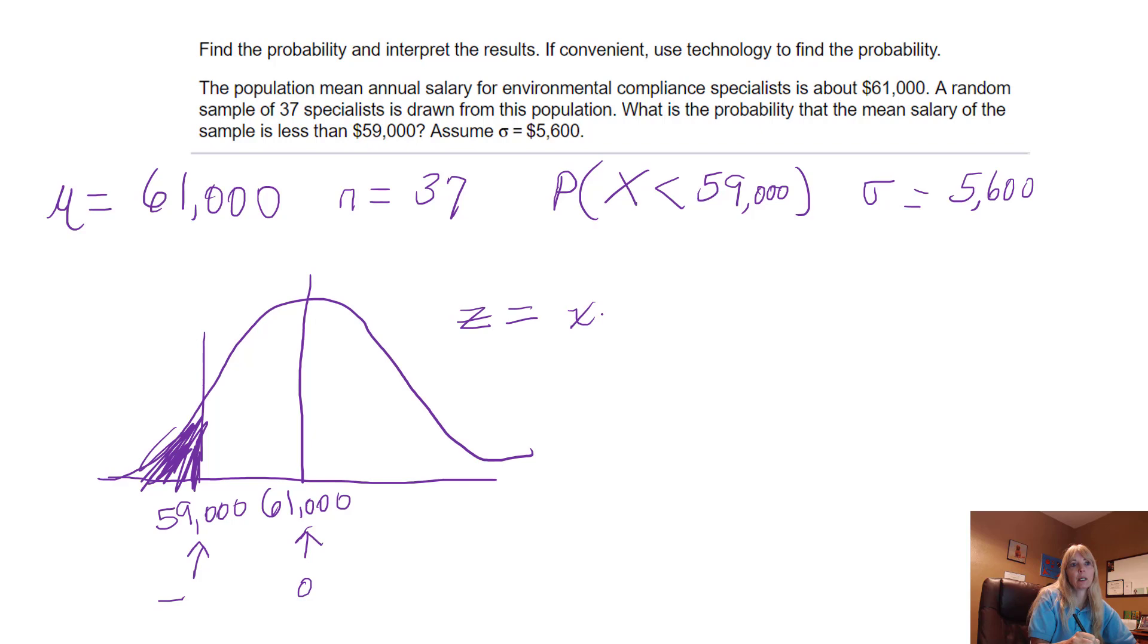Well, we use my formula, x minus μ over the standard deviation. But wait! We have a sample size, so we do that. So plugging everything in, my x is $59,000, that's my value of interest, minus my population mean, divided by the population standard deviation over the square root of 37.